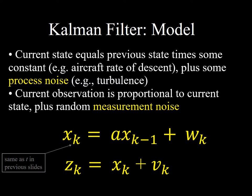That's the model of observation: the observation equals the actual state plus some noise. The model of the state itself is interesting. You could say the current time value of the state equals the previous value, but with the Kalman filter you can also multiply the previous state by some constant A. For example, if an airplane is descending at a constant rate, its current altitude might be 95% of its altitude at the last second. There's also something called process noise — I think of it as the inherent noise of the process itself, like a little bit of turbulence during an airplane's descent. The altitude is actually somewhat noisy; it's not a perfectly smooth descent.